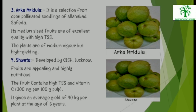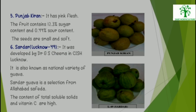4. Shweta: Developed by CISH Lucknow, fruits are appealing and highly nutritious. The fruit contains high TSS and Vitamin C, and gives an average yield of 90 kg per plant at the age of 6 years. 5. Punjab Kiran: It has pink flesh. The fruit contains 12.3% sugar and 0.44% acid content, with small and soft seeds. 6. Sardar, also known as Lucknow 49: Developed by Dr. G.S. Chima at CISH Lucknow, it is also known as the National Variety of Guava, and is a selection from Allahabad Safeda with high TSS and Vitamin C content.